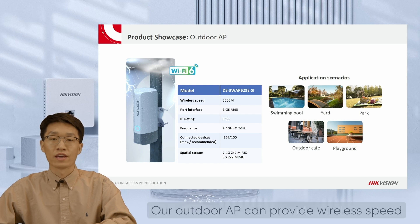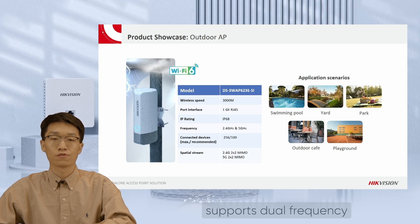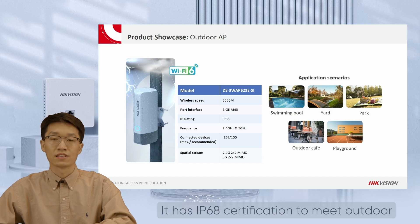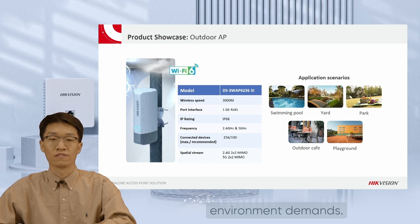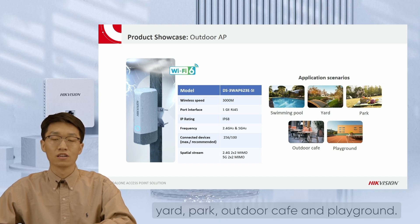Our outdoor AP can provide wireless speed up to 3000 Mbps with Wi-Fi 6, and it supports dual frequency band and 2x2 MIMO technology. It has IP68 certification to meet outdoor environment demands. It is suitable for use in swimming pools, yards, parks, outdoor cafes, and playgrounds.